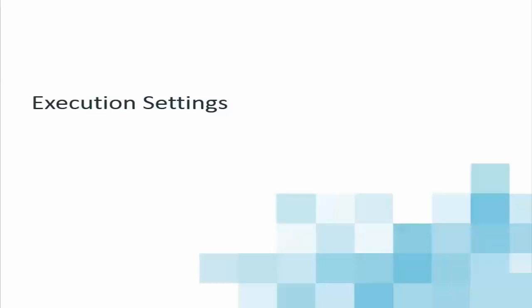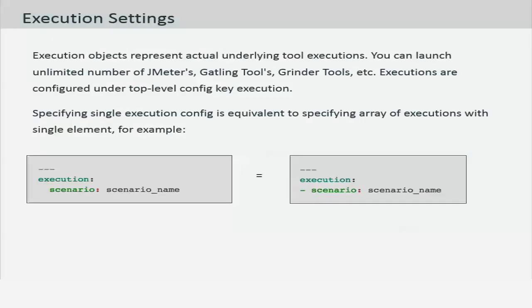In this module we will walk you through the execution settings that you must accomplish before running the Taurus script. The execution object typically represents the underlying tool executions. You can launch unlimited numbers of JMeters or Gatling tools or Grinder tool scripts. Executions are configured under the top-level configuration key execution.